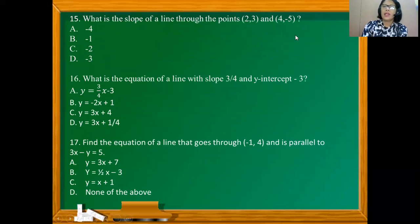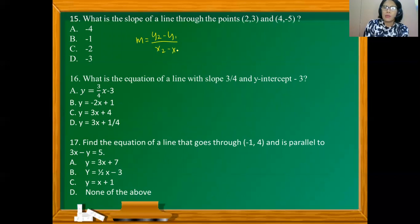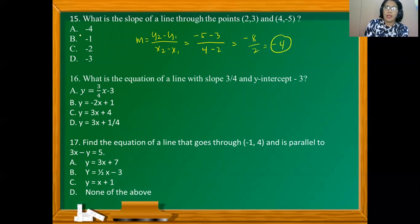What is the slope of the line that passes through the two given points? Using m = (y₂ − y₁)/(x₂ − x₁), we have (−5 − 3)/(4 − 2) = −8/2 = −4. So the slope is negative 4, and that is option A.